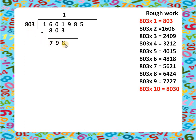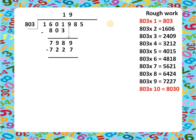803 is more than 798, so we bring down 9 to get 7989. From the rough work, 803 times 9 is 7227, so we write 9 as the quotient. We subtract 7227: 9 minus 7 is 2, 8 minus 2 is 6, 9 minus 2 is 7, 7 minus 7 is 0. We bring down the next digit, 8, giving new dividend 7628.